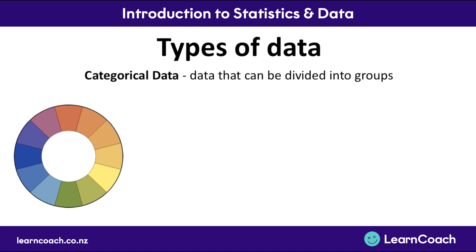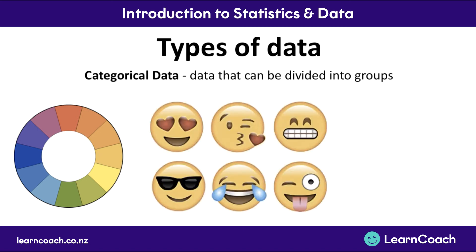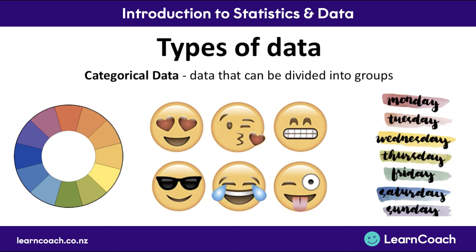Another example of categorical data would be emotions — there are categories like happy, sad, excited, and lonely. Another example would be days of the week — Monday, Tuesday, Wednesday, Thursday, Friday, Saturday, Sunday — they are all very distinct categories.